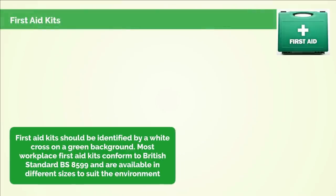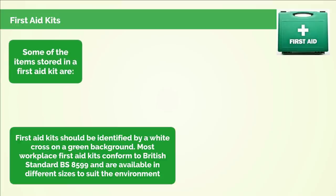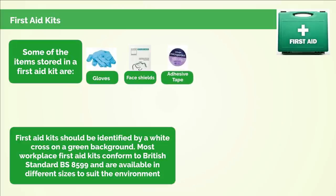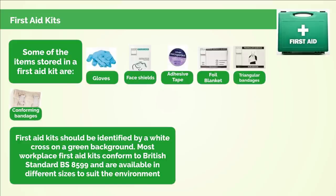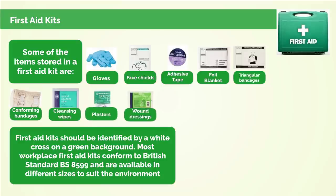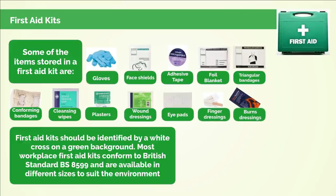First aid kits should be identified by a white cross on a green background. Most workplace first aid kits conform to British Standard BS 8599 and are available in different sizes to suit the environment. Some of the items stored in a first aid kit are: gloves, face shields, adhesive tape, foil blanket, triangular bandages, conforming bandages, cleansing wipes, plasters, wound dressings, eye pads, finger dressings, burn dressings, and scissors.